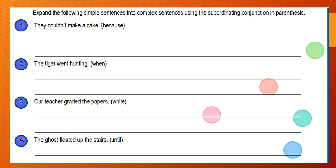Now we need to expand simple sentences into complex sentences using the given subordinating conjunctions. 'They couldn't make the cake because they didn't have eggs or ingredients.' 'The tiger went hunting when he felt hungry.' If you start with 'because,' don't forget to put a comma between the clauses. 'Our teacher graded the papers while we were studying.' 'The ghost floated up the stairs until the boys left the room.' What's important is: if you start with the subordinating conjunction, you must separate the dependent clause from the independent one with a comma.